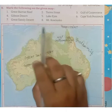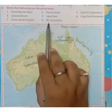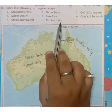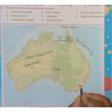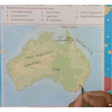Next is Great Sandy Desert. Great Sandy Desert is located here — you will mark Great Sandy Desert. Then next is Mount Kosciuszko, which is situated here.